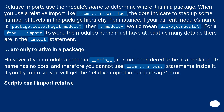Relative imports use the module's name to determine where it is in a package. When you use a relative import like 'from .. import foo', the dots indicate stepping up levels in the package hierarchy. For instance, if your module's name is package.subpackage1.moduleX, then '..moduleE' means package.moduleE. For a 'from ... import' to work, the module's name must have at least as many dots as the import statement. However, if your module's name is __main__, it is not considered to be in a package — its name has no dots, so you cannot use 'from .. import' statements, and you will get the 'relative import in non-package' error.